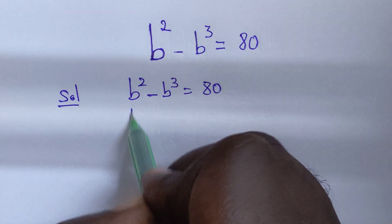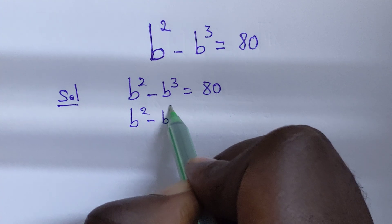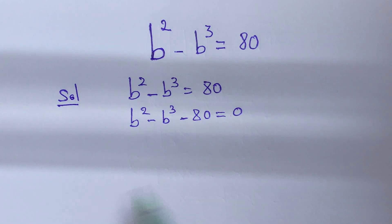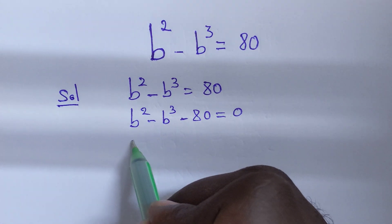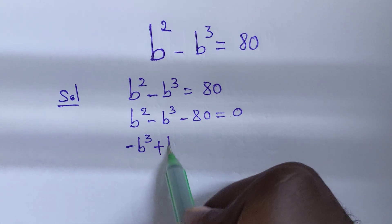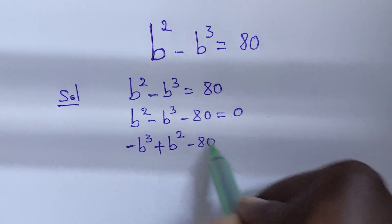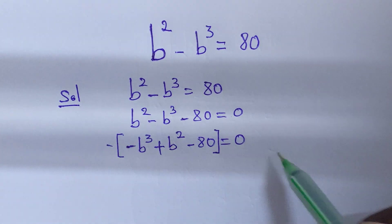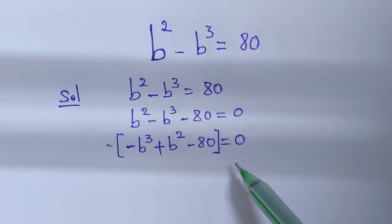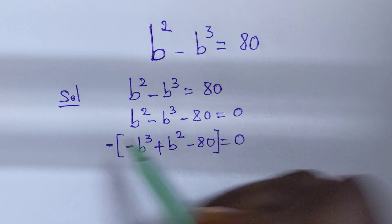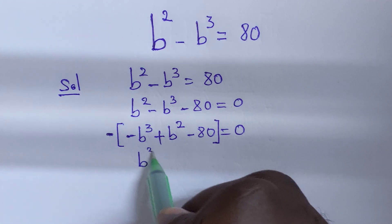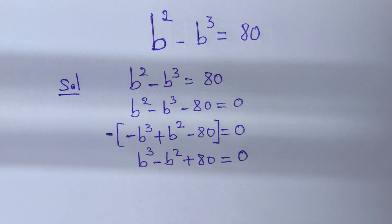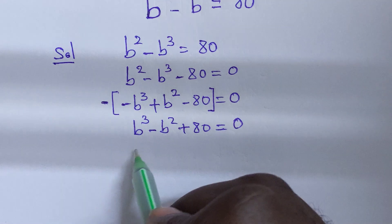This can be written as b squared minus b to the power of 3 minus 80 equals 0. We rearrange to get negative b to the power of 3 plus b squared minus 80 equals 0. Then we multiply both sides by negative 1, because multiplying 0 by anything doesn't change it.